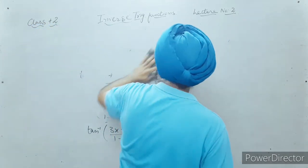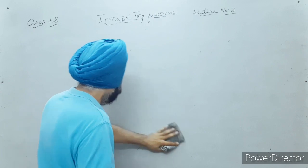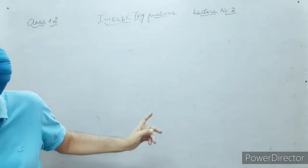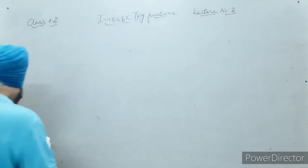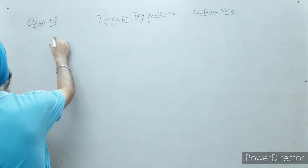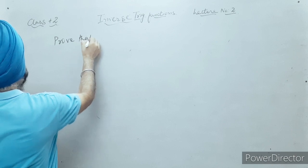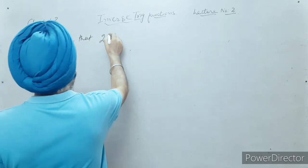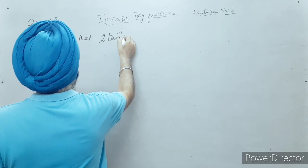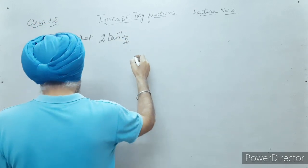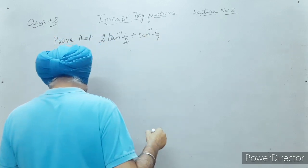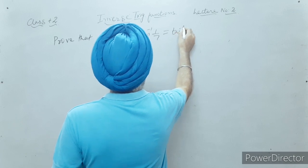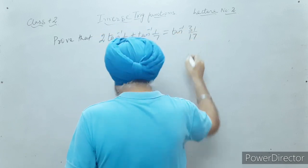The next question from the NCERT book: prove that 2 tan inverse (1/2) plus tan inverse (1/7) equals tan inverse (31/17). First, I solve 2 tan inverse (1/2) using the formula 2 tan inverse x equals tan inverse [2x upon (1 minus x²)]. Substituting x equals one half, I get tan inverse [2 times (1/2) upon (1 minus 1/4)] equals tan inverse [1 upon (3/4)] equals tan inverse (4/3).